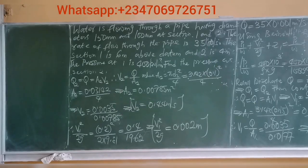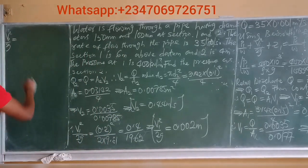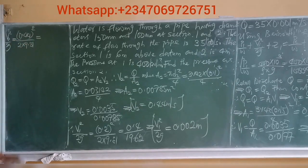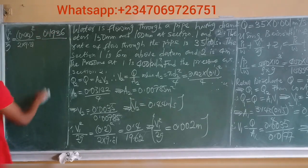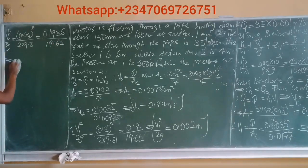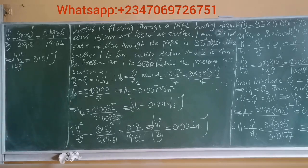Now computing V2 squared over 2G: (0.44)² divided by (2 × 9.81) = 0.1936 over 19.62. This gives V2 squared over 2G equal to 0.01 meters.